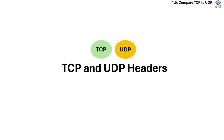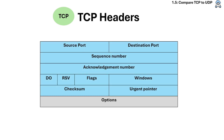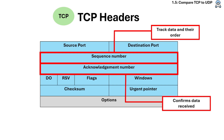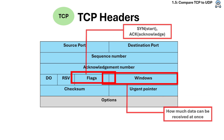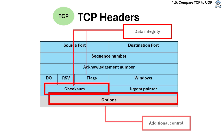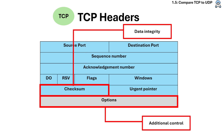TCP and UDP also have different header sizes and contents. TCP headers are more complex because TCP provides reliability, ordering, and flow control using these fields: sequence number, which keeps track of data chunks and their order; acknowledgement number, which confirms data received; flags with control bits like SYN, ACK, and FIN; window size for flow control, indicating how much data can be received at once; checksum, which ensures data integrity; and options for additional control.